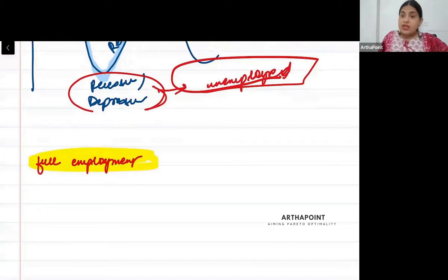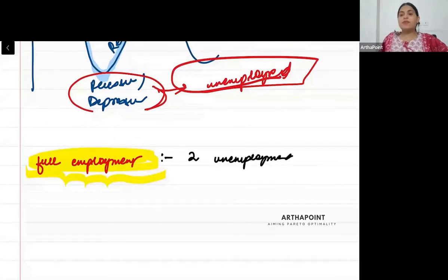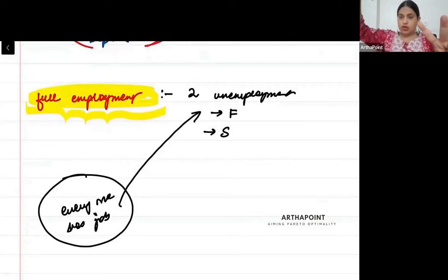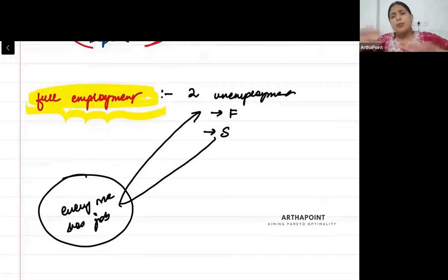But even at full employment, we assume that everybody has a job. That is called the natural rate of unemployment.